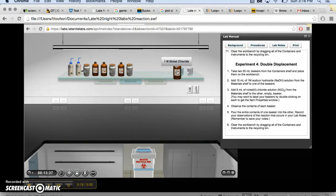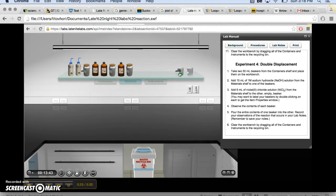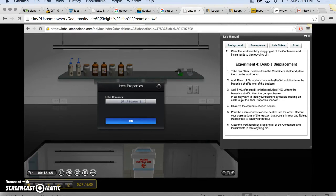Then we're going to take our one molar nickel chloride and place six milliliters of it in our second 50 milliliter glass beaker. Once we do this, we're going to go ahead and properly label our beakers.